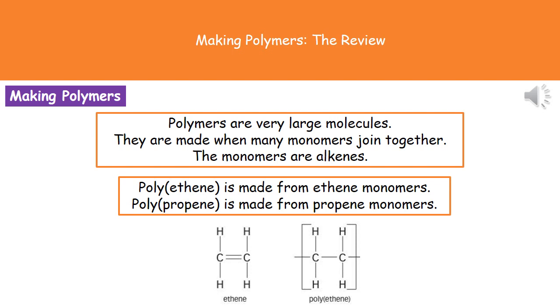In our polymers, a monomer is an alkene. The key thing to remember here is that monomers are alkenes, and many monomers joining together makes a polymer.